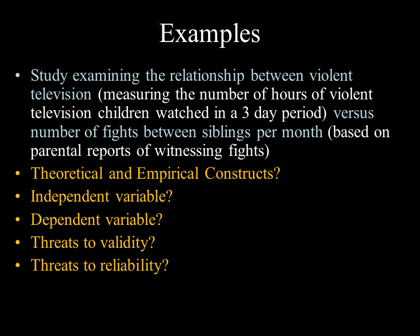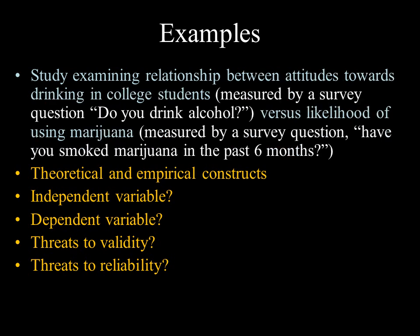Second, imagine a study examining the relationship between violent television — measured by hours of violent TV children watched in a three-day period — versus number of sibling fights per month based on parental reports. What are the theoretical and empirical constructs, independent and dependent variables, threats to reliability and validity? Finally, consider a study on attitudes toward drinking in college students, measured by a survey question asking whether they've smoked marijuana in the past six months. Identify the constructs, variables, and threats to reliability and validity.